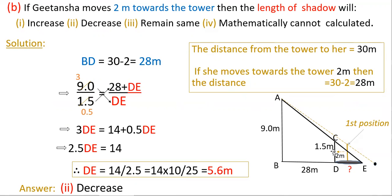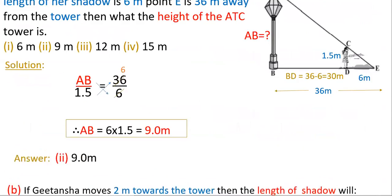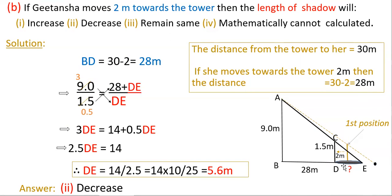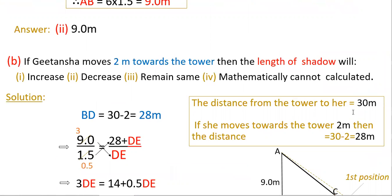The distance is now 28 meters. Applying corresponding side ratios: 9 by 1.5 equals BE by DE, where BE equals 28 plus DE. So 9 by 1.5 equals (28 plus DE) by DE. Simplifying: 6 DE equals 28 plus DE, giving 2.5 DE equals 14, so DE equals 14 by 2.5, which is 5.6 meters. Since the previous shadow was 6 meters and now it is 5.6 meters, the shadow decreases — option 2 is correct.